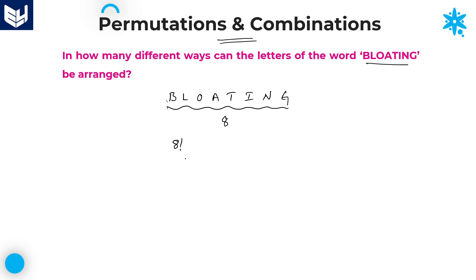Now after writing 8 factorial, once check if there is any repetition of letters. B is not repeated, L is not repeated, O is not repeated, A, T, I, N, G — all are different letters. So the required number of ways is equal to 8 factorial. That is the required answer for this question.